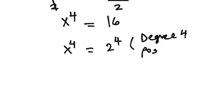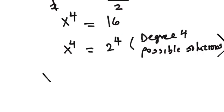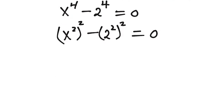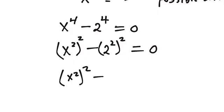For four possible solutions, we take x to the power of 4 and bring 2 to the power of 4 to the right-hand side, giving us x to the power of 4 minus 2 to the power of 4 equals 0. We can rewrite this as (x squared) squared minus (2 squared) squared equals 0, and since 2 squared is 4, we have (x squared) squared minus 4 squared equals 0.